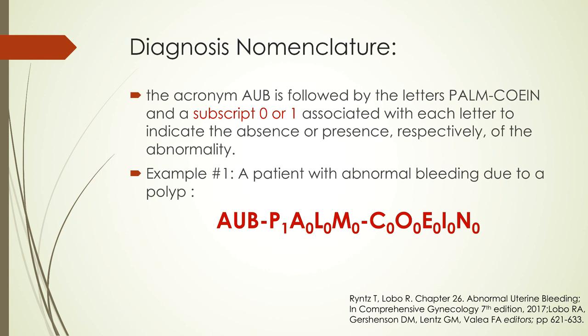This is the suggested way of writing down a diagnosis of AUB using the PALM-COEIN classification. The acronym AUB is followed by the letters PALM-COEIN, and a subscript of 0 or 1 is associated with each letter to indicate absence or presence respectively of the abnormality. For example, in a patient with AUB due to a polyp, we write AUB followed by PALM-COEIN, with P having a subscript of 1 and the rest having a subscript of 0.